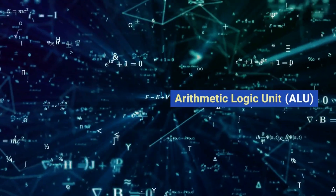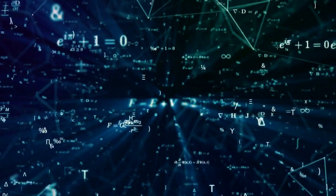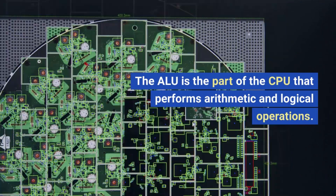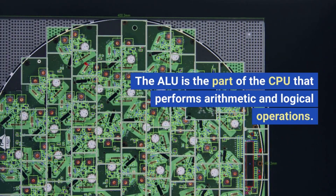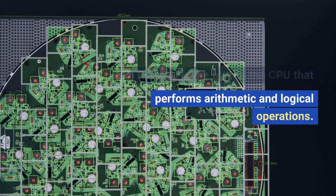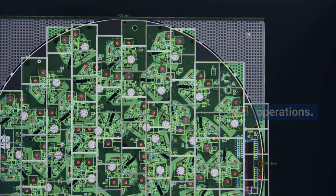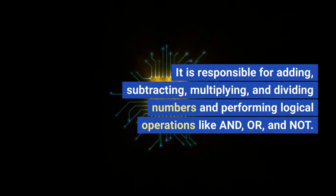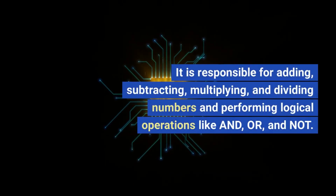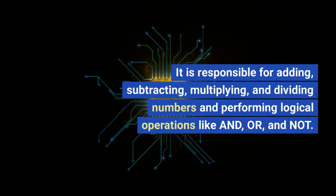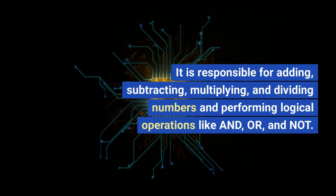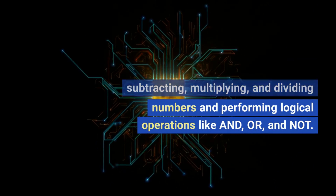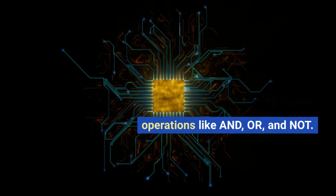Arithmetic Logic Unit, or ALU. The ALU is the part of the CPU that performs arithmetic and logical operations. It is responsible for adding, subtracting, multiplying, and dividing numbers, and performing logical operations like AND, OR, and NOT.